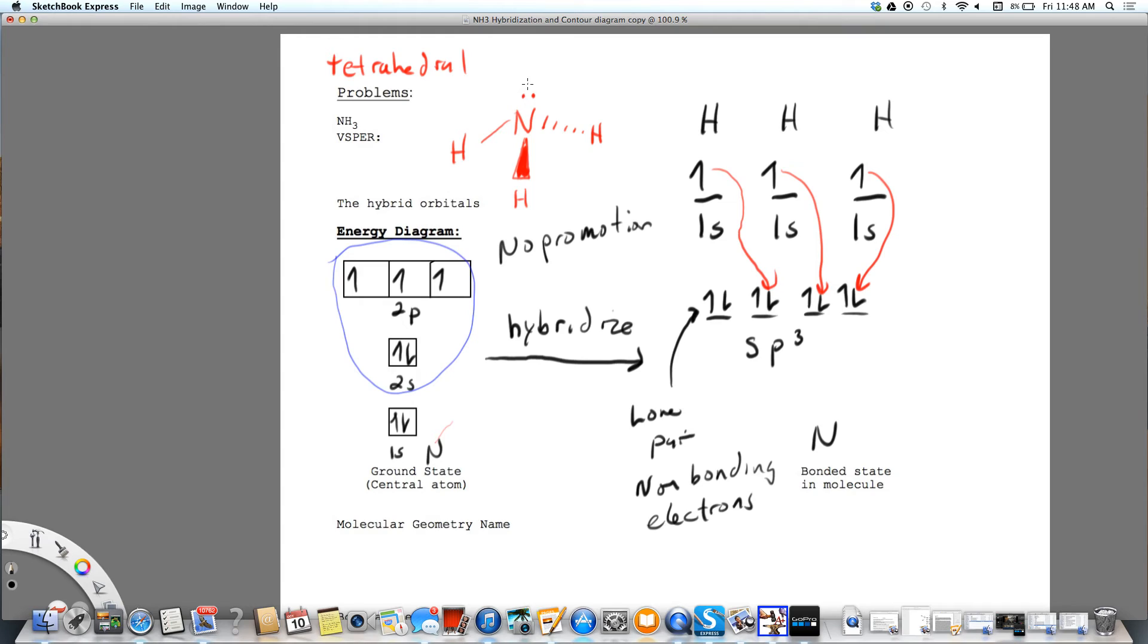And you will notice that the lone pair bonding pair repulsion is greater, is greater than bonding pair, bonding pair repulsion. And so that's why these electrons are going to push on each of these a little bit more so it's not 109.5 for an angle. The angle is 107.9 degrees because of that extra repulsion.